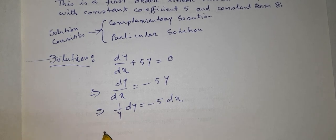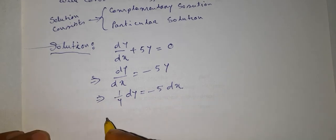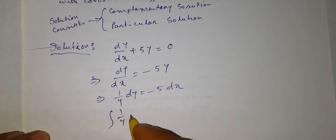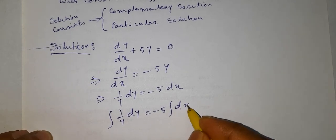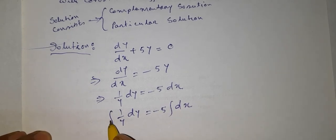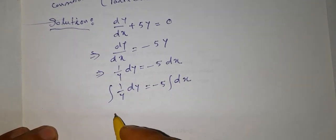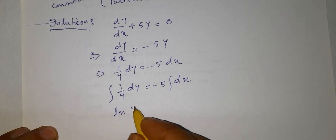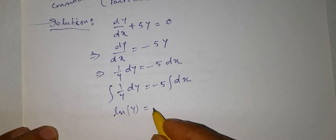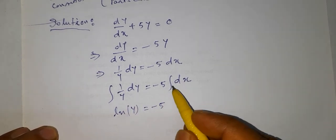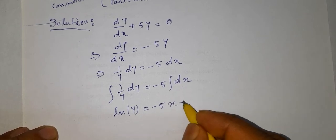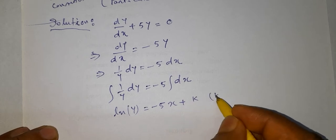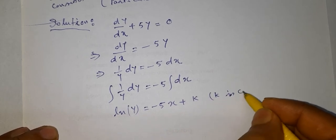Taking integration on both sides, we get the integral of 1/y dy equal to minus 5 times the integral of dx. The integration of 1/y with respect to y is natural log of y, equal to minus 5x plus k, where k is a constant.